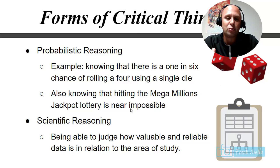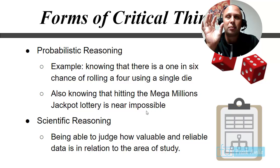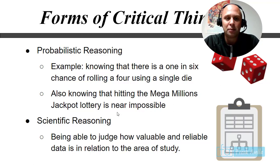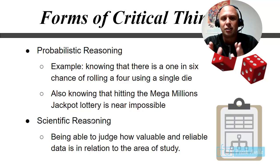When people use the word 'near impossible,' people think there's still a chance — but it's basically impossible. You have to visualize it: the chance of hitting the Mega Millions is like filling all the buildings in a Manhattan city block with ping pong balls, and the winning ticket is one red ping pong ball among them all. Scientific reasoning is being able to judge how valuable and reliable data is in relation to an area of study — especially important now when analyzing conflicting scientific studies, like those related to the pandemic.